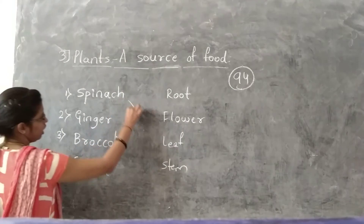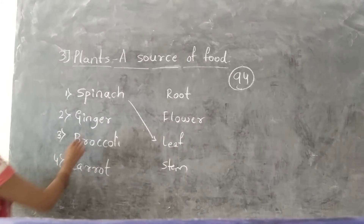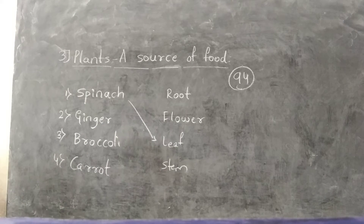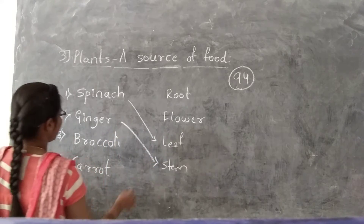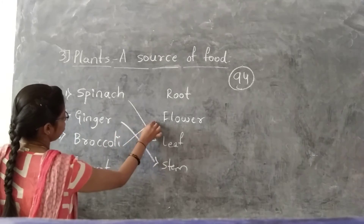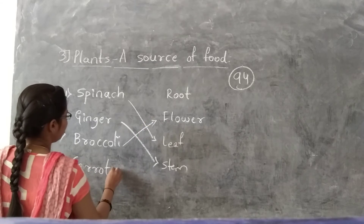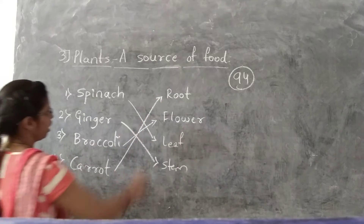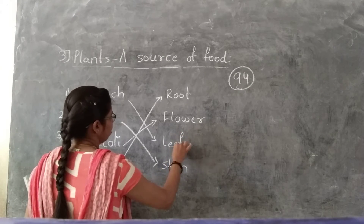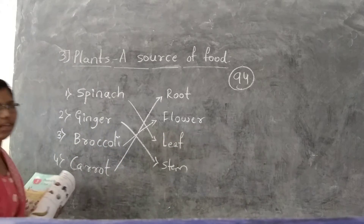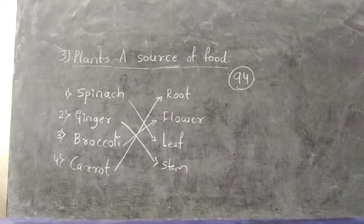Spinach is a leaf. Ginger is a stem. Broccoli is a flower. And the last one, carrot is a root. Using a pencil, match these in your textbook on page number 94.